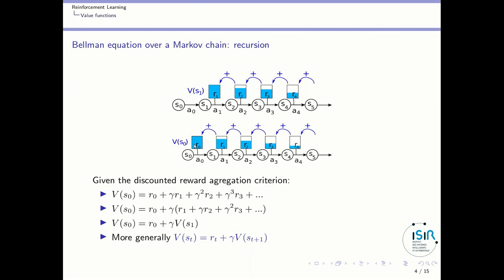If you look more closely, the value of s0 is r0 plus gamma times the value of s1 — because you just multiply all the following terms by gamma once more. So more generally, beyond this example, if st+1 follows st, the value of st will be the local reward plus gamma times the value of st+1. That's a recursive relation which will be very useful to compute values in MDPs.